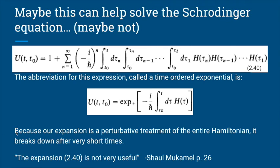In Professor Mukamel's book, it actually says this expansion is not very useful — so you feel a little deflated. But we're going to arrive at a more useful form. Another way to write this series, because it's a lot to look at, is as a time-ordered exponential — written with a little plus sign. This is not the same as an ordinary exponential function; it's a shorthand notation for that entire nested sum. The problem is we had a perturbative treatment using the entire Hamiltonian, which breaks down after very short times.